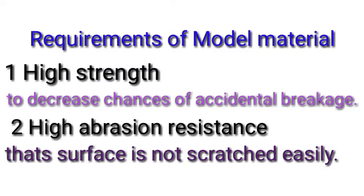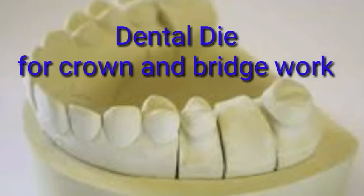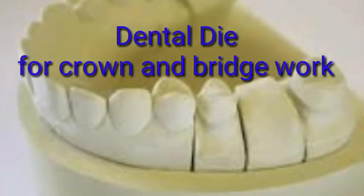Requirements of model materials: Number one, high strength to decrease chances of accidental breakage. Number two, abrasion resistance so that the surface is not scratched easily. We use these materials for making artificial dies or models because they are dimensionally stable and very hard. Here you can see an example of a die material.